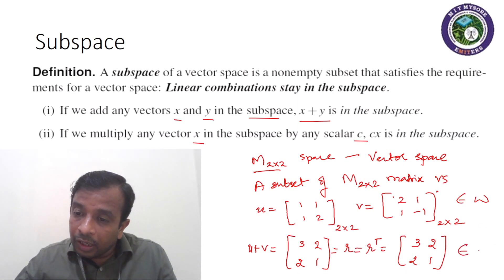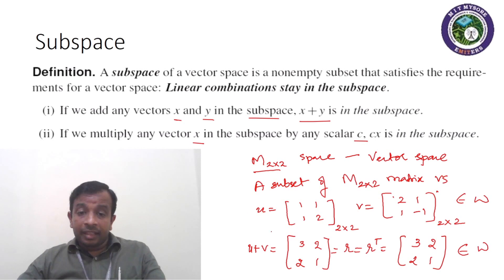You see that R is equal to R transpose. So this also belongs to W. Hence, vector addition is satisfied.